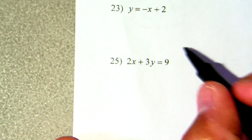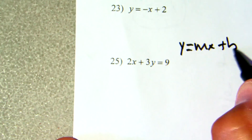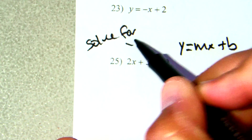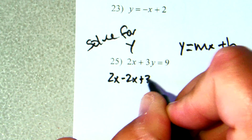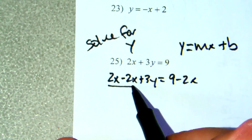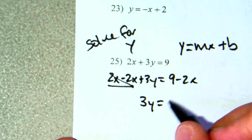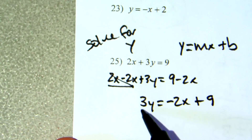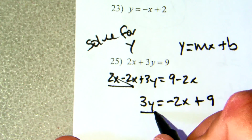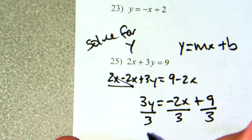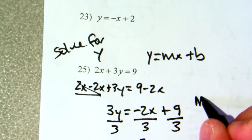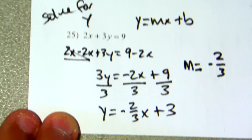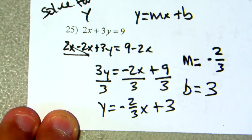The harder problem is when the equation is not in y equals mx plus b form — you have to solve for y. For example, subtract 2x from both sides so the 2x's cancel, leaving 3y equals negative 2x plus 9. Then divide everything by 3, giving y equals negative two-thirds x plus 3. So the slope is negative two-thirds and the y-intercept is 3.